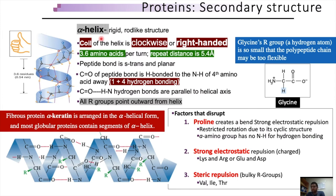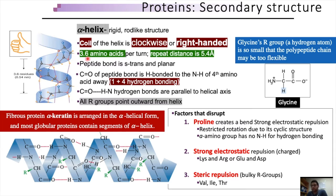The alpha helix is a rigid, rod-like structure that develops as a result of a clockwise, right-handed twist of the polypeptide backbone. As a result of this right-handed orientation, the carbonyl group of the first amino acid can make a hydrogen bond with the fourth amide hydrogen — that is why this interaction is called a 1+4 hydrogen bond. As a result of this interaction, the peptide chain takes the form of a coil, with each turn consisting of roughly 3.6 amino acid residues and a pitch of roughly 5.4 Angstroms.